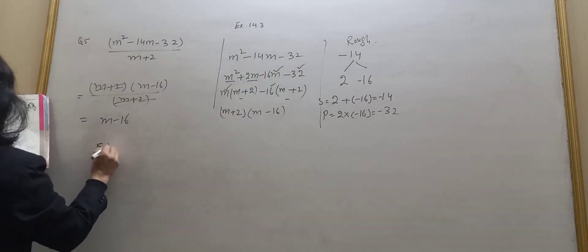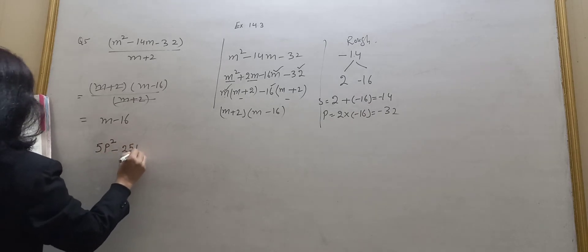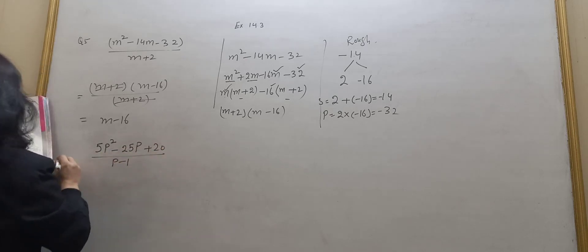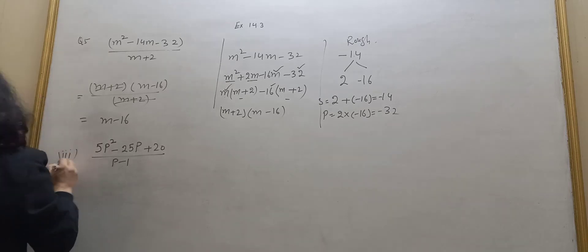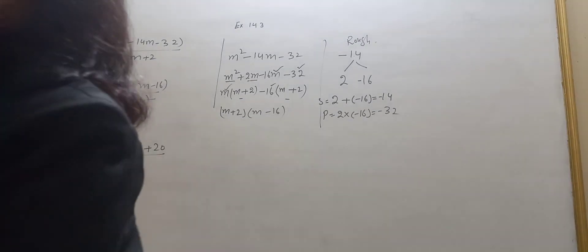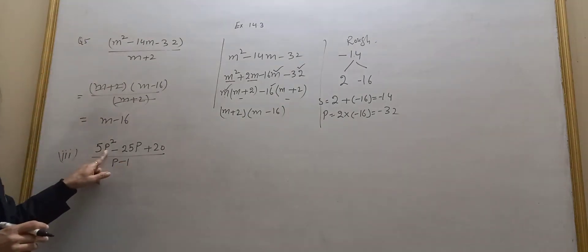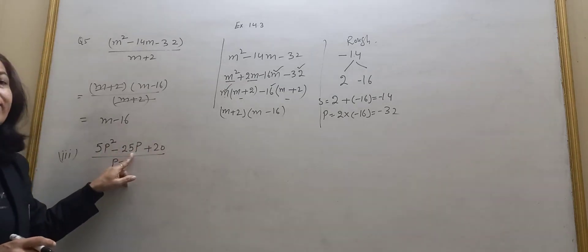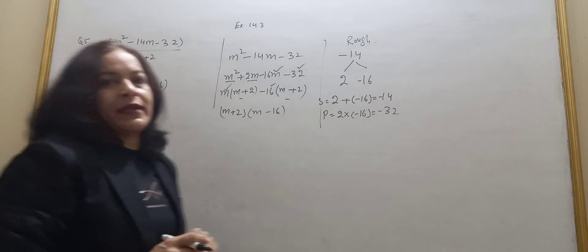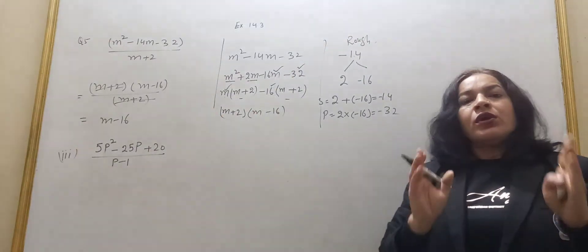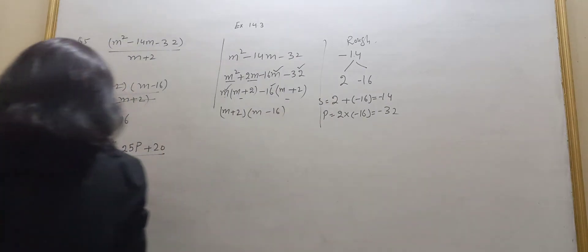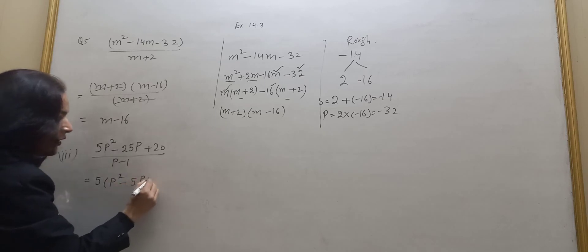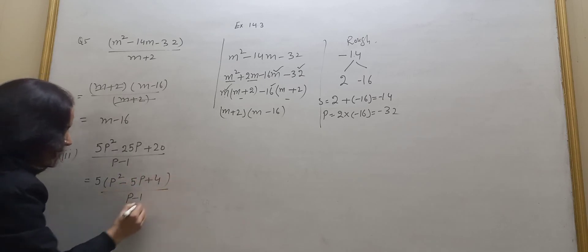Next part, third part: 5p squared minus 25p plus 20, upon p minus 1. Now 5p squared, 25p, and 20 are all multiples of 5, so we take 5 common first. When you can take a common factor, do that first — it makes the question easier. So taking 5 common gives us 5 into p squared minus 5p plus 4, divided by p minus 1.